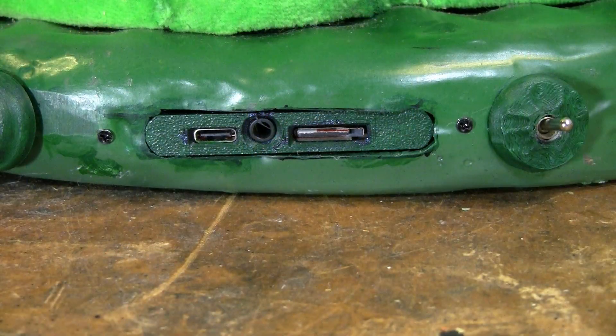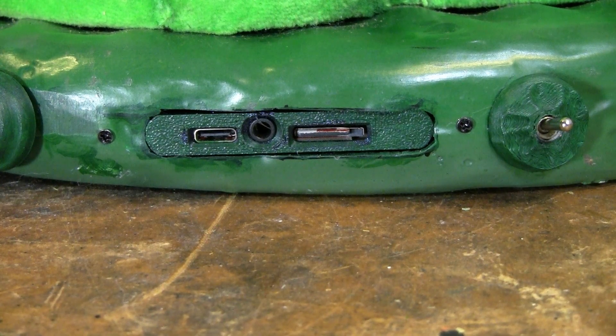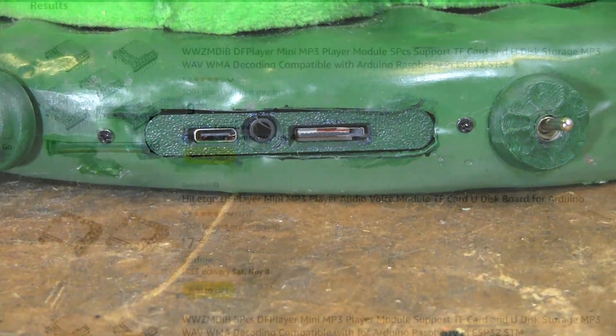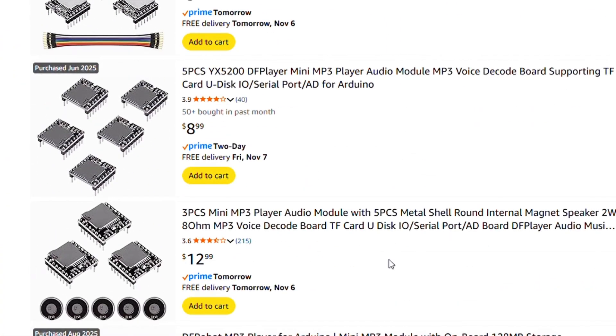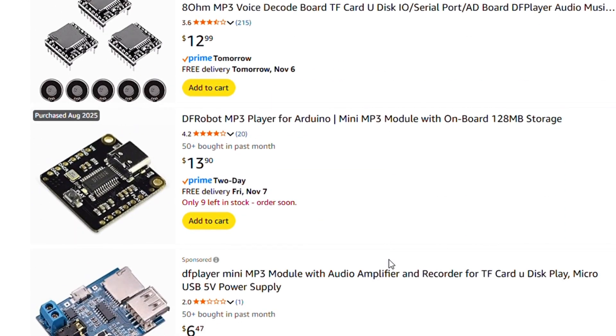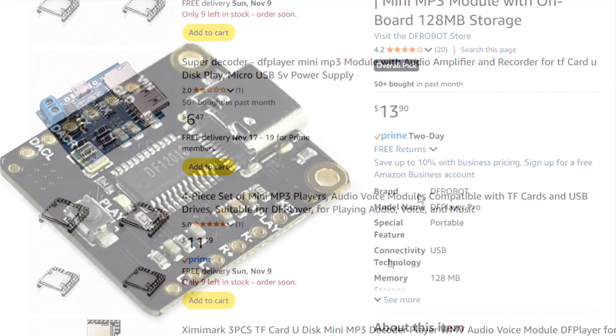But I found out a lot of these MP3 players are just mono and they're not stereo at all. Take for instance the DF Player Mini. It is completely mono. It does have a right and left audio output but it's the same side. It's not even mixed down. It's just one track spread across the outputs.